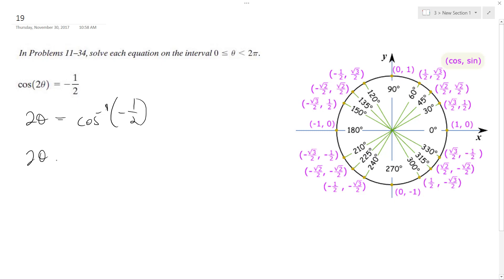I end up with cosine equal to negative one-half. That gives us two pi over three and four pi over three.